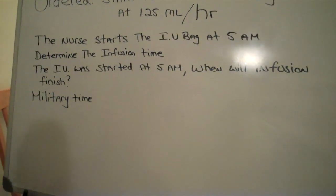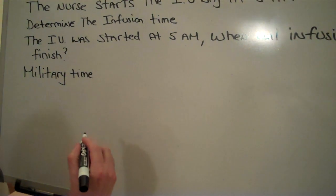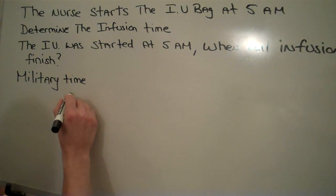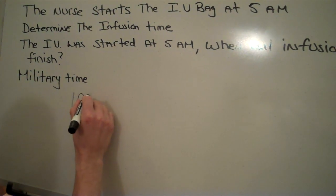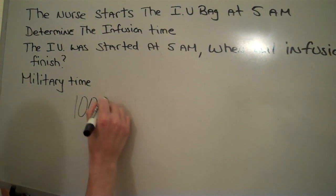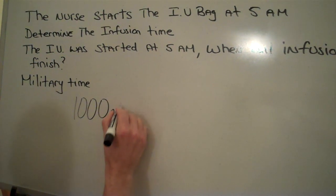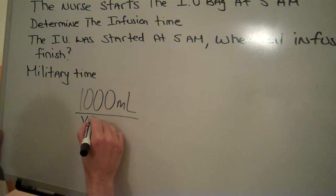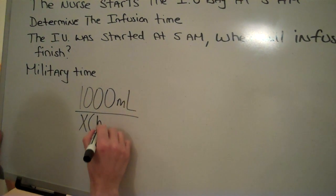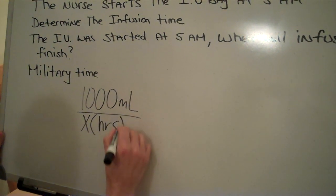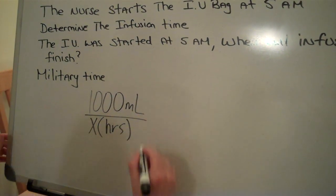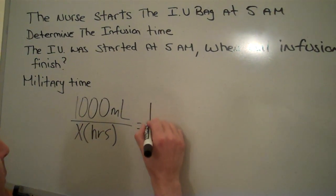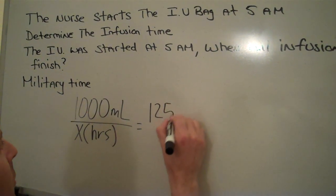We first know we are looking for time. We're given in our order our IV bag. We're going to be using ratio and proportion to solve. So we have a 1000 milliliter bag, and we're trying to figure out how much time in hours it will take to infuse, given our infusion rate of 125 milliliters per hour.